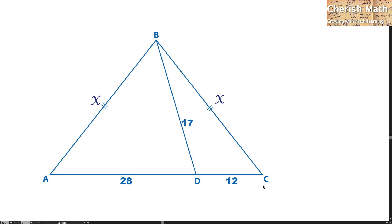ABC is an isosceles triangle. The length of AD is 28 units, DC is 12, and BD is 17. We need to find what is the value of X.